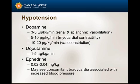Dobutamine increases myocardial contractility but decreases systemic vascular resistance, so it increases cardiac output but not blood pressure — which isn't what we want in dogs and cats. We use it in horses. Ephedrine can be given as a bolus; I call it weak epinephrine, and it tends to last a little longer, bringing up blood pressure and heart rate.